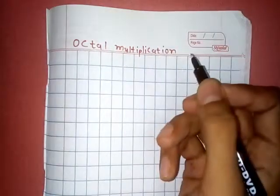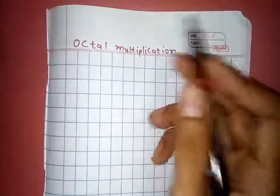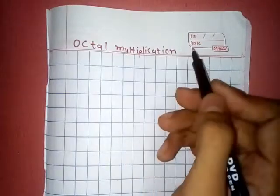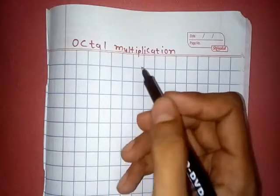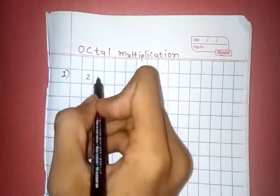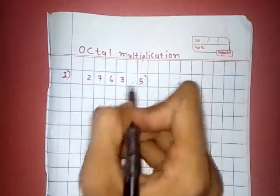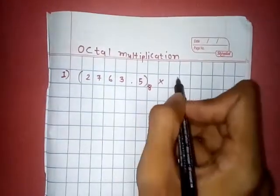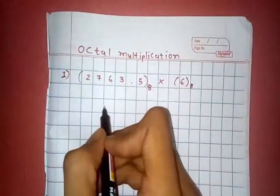Hi friends, today our topic is octal multiplication and I will explain it by the concept of decimal multiplication so that it is very easy to understand. Now take a basic example first and that value is 2763.5 and that is in octal into 6.